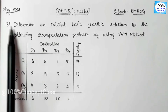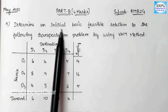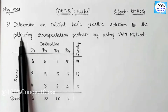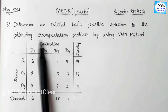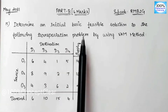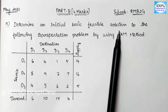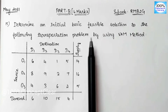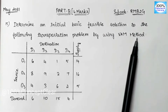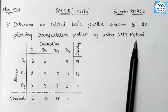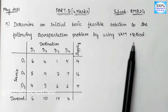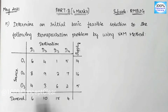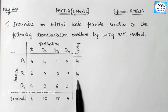We will take question 15. The question asks: determine an initial basic feasible solution to the following transportation problem using the VAM method. WAM method is Vogel's Approximation Method, also known as the UV method.